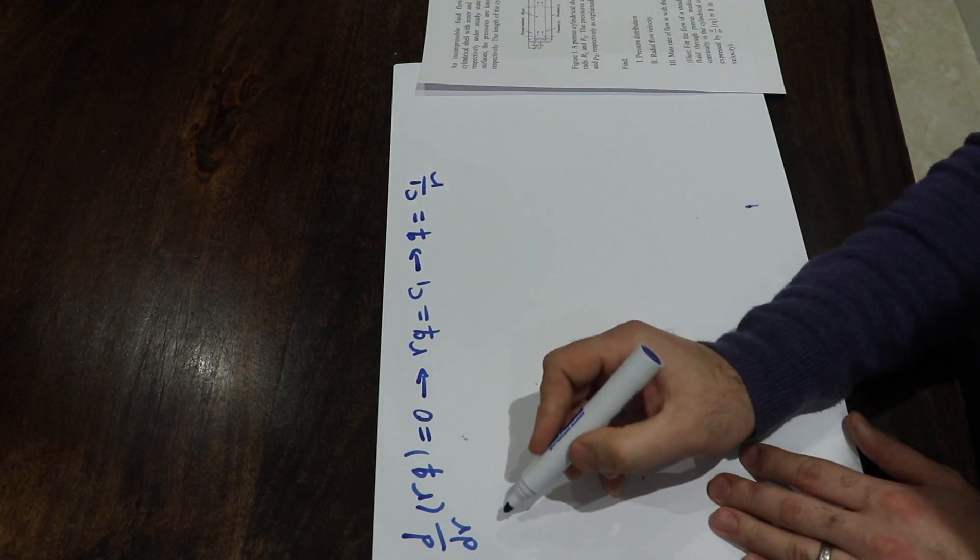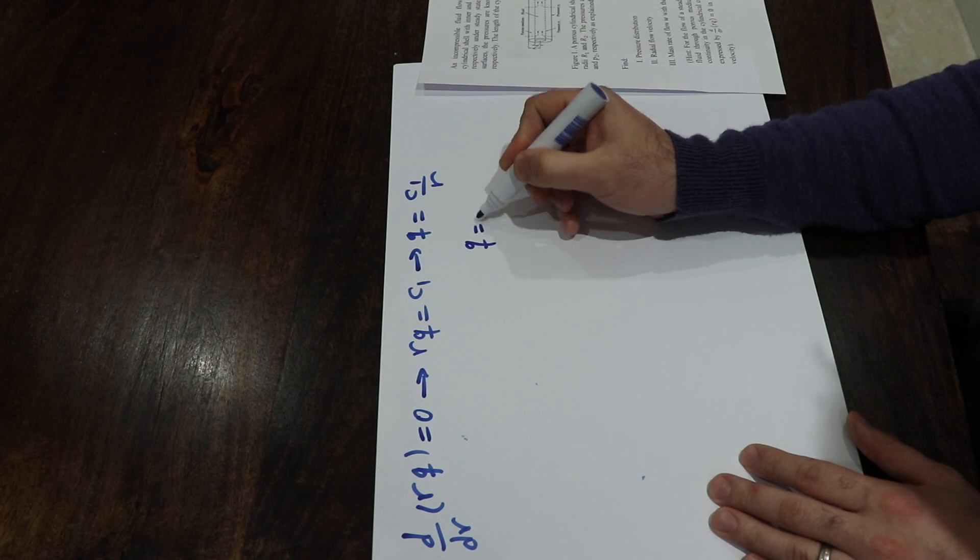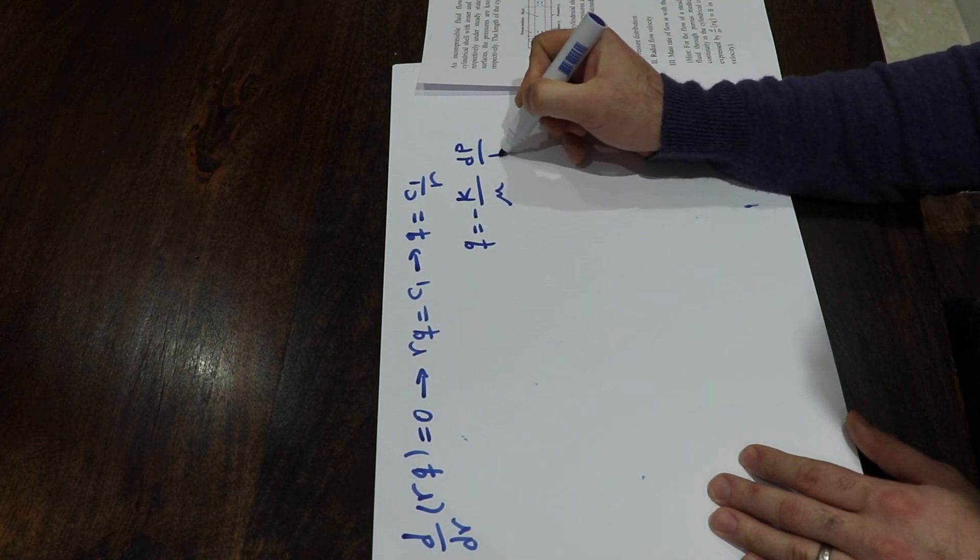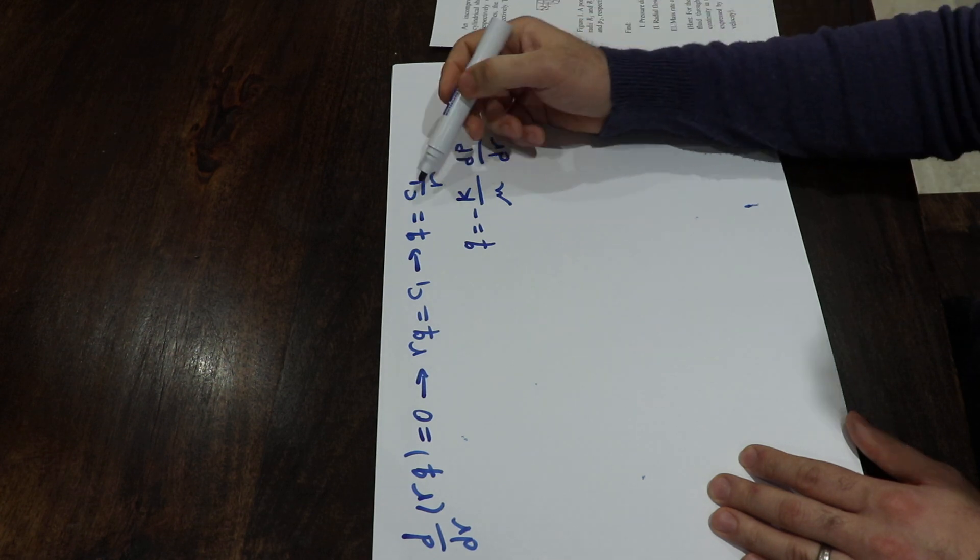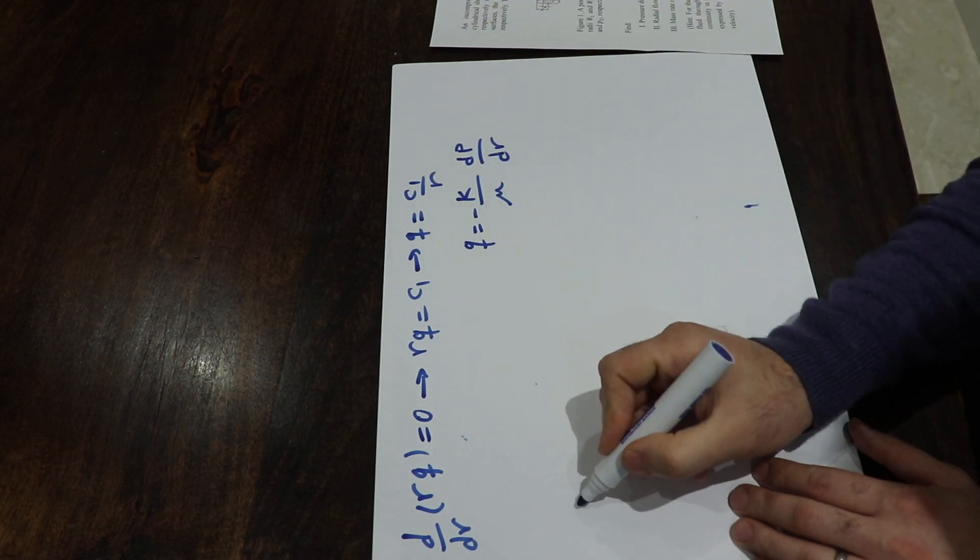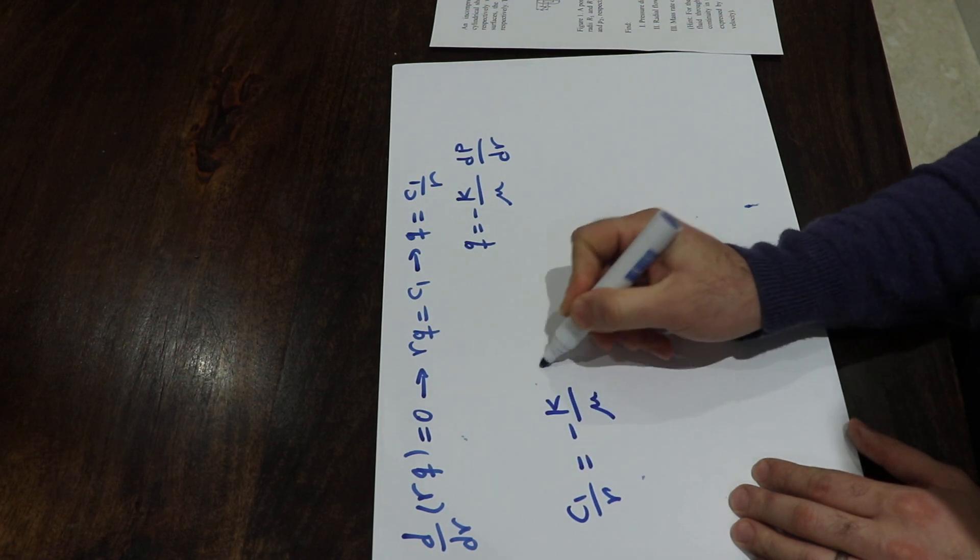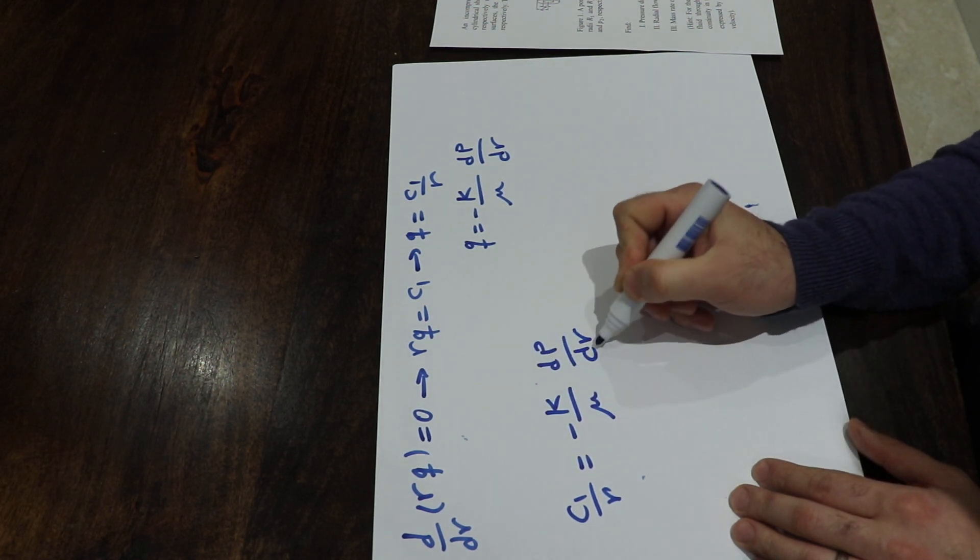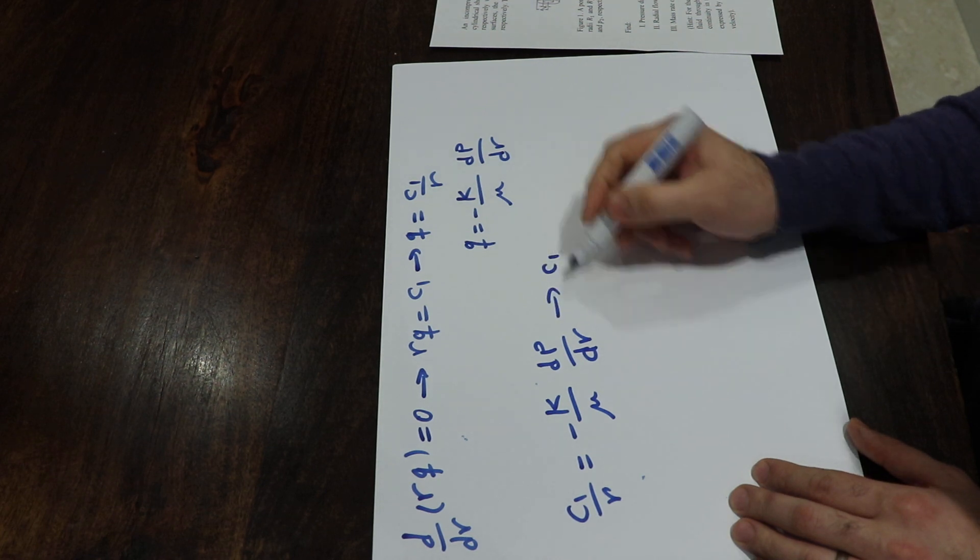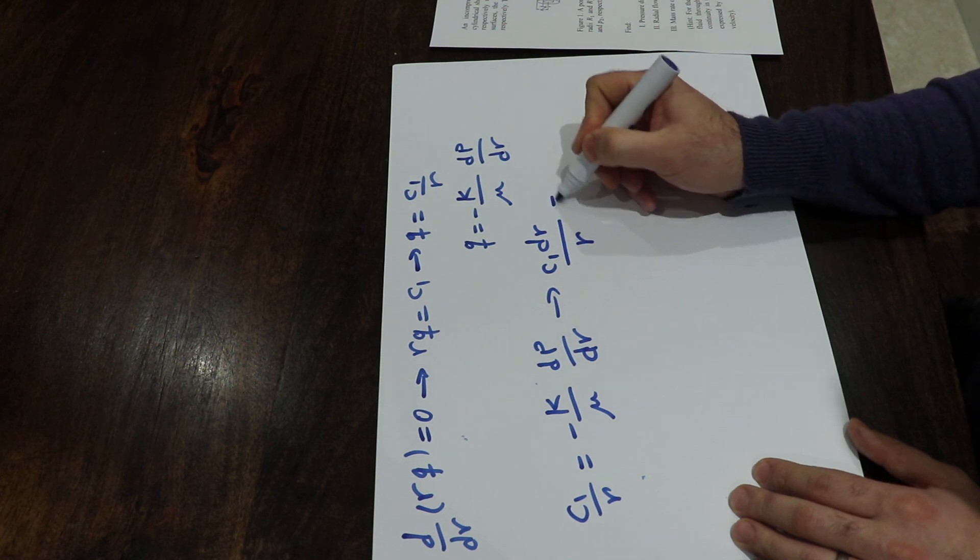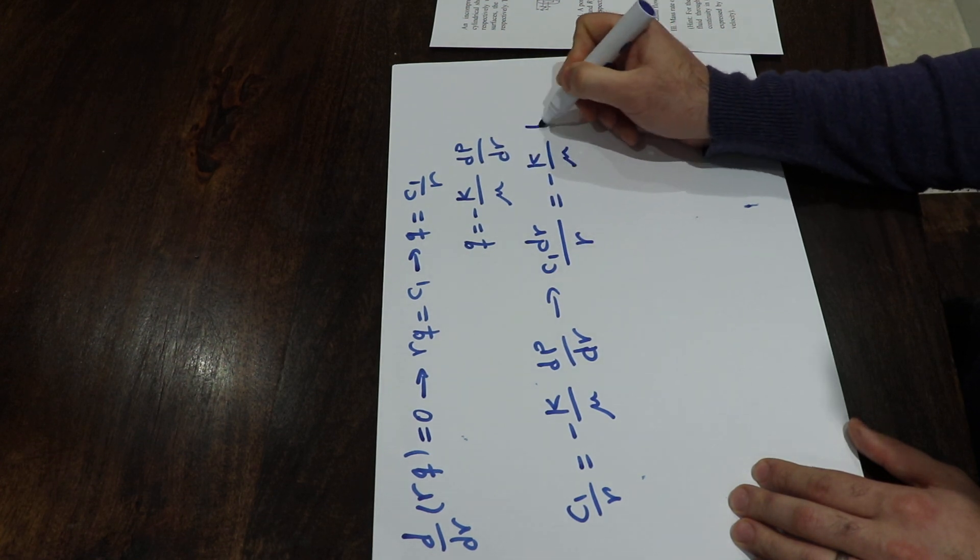We know from Darcy's law that Q is equal to minus K/mu dP/dR. So you can equate these two expressions: C1 over R will be equal to minus K/mu dP/dR. If you rearrange this equation, you can write C1 times dR divided by R equals minus K/mu dP.